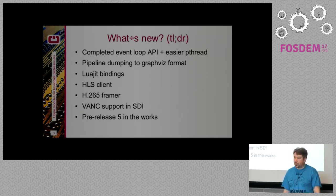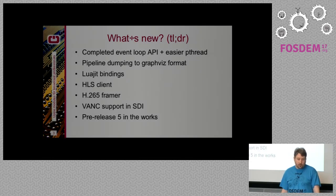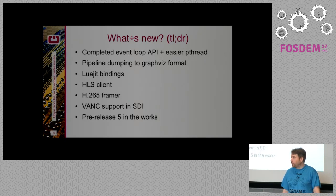Some other frameworks also have HLS clients, but we now have one where you can choose the bandwidth or the variant you want, and you can re-multiplex and repurpose it in a different format. I'll show later an example where we repurpose HLS to a UDP transport stream. We've also had some work on H.265 — we are able to decode and support it, including support in SDI. We wanted to release preview number five, but the work isn't finished yet; we'll probably do that in the next few weeks, and after that, 1.0 we hope.